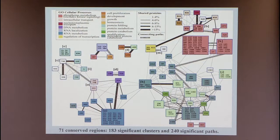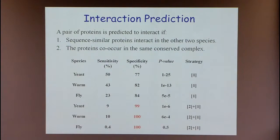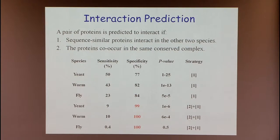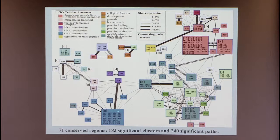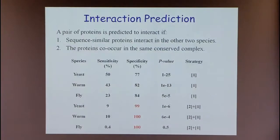Analyzing protein networks across species is stronger than constraining yourself to a single species. Another insight from multiple-species analysis is interaction prediction. Each region contains conserved subnetworks in which certain edges may be missing, and you can try to predict them. You can use two strategies: strategy one uses interologues — if two proteins interact in one species, predict the orthologous pair interacts in the other. Strategy two uses the same principle but only if the proteins occur within a conserved subnetwork, placing them in the same functional context.